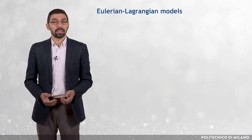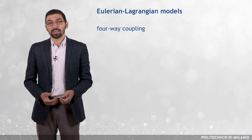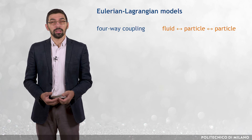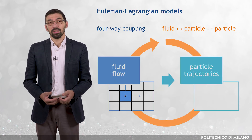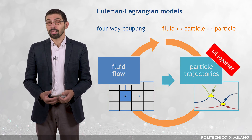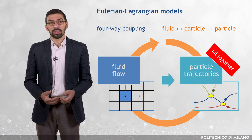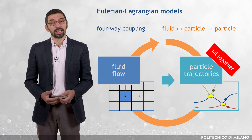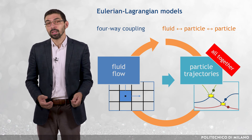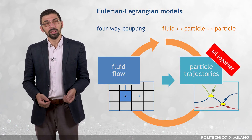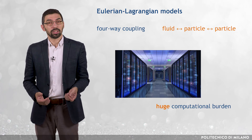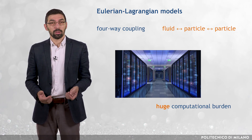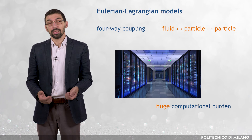Finally, in the case of four-way coupling regime, also the particle-particle interactions must be accounted for. The solution procedure is similar to that of the two-way coupling regime, but with the important difference that the particle trajectories are no longer calculated one by one, but all together at the same time, because the trajectory of a particle is affected by those of the other particles via inter-particle collisions. As a result, the computational burden becomes huge, and generally unaffordable for complex flows of engineering interest.